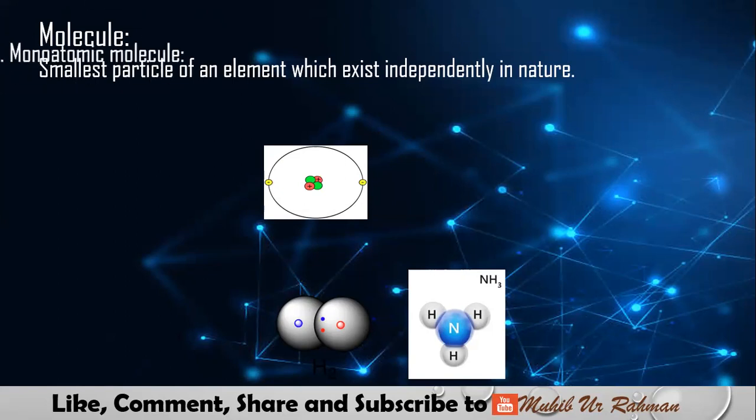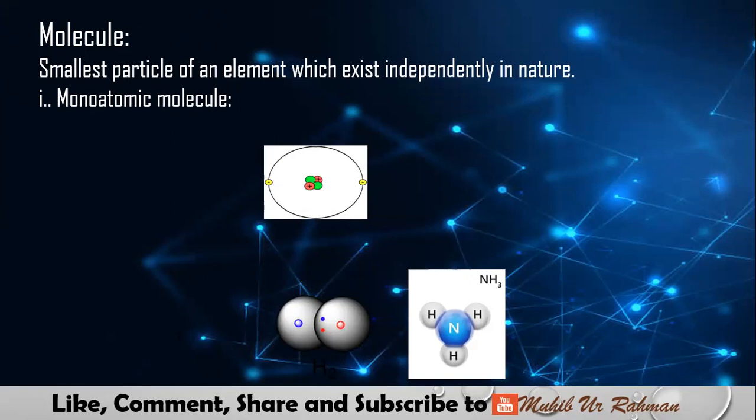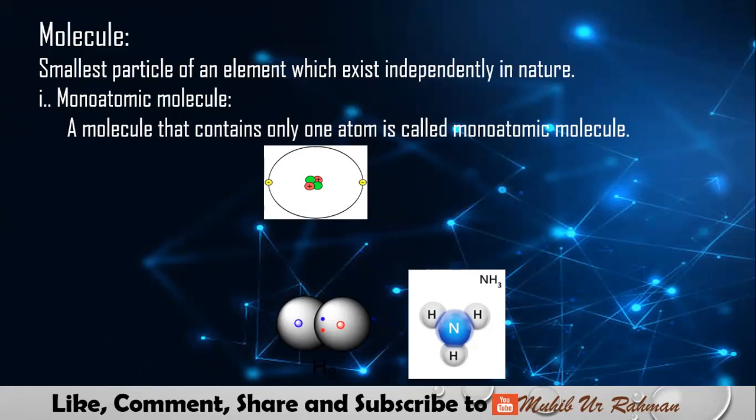Molecules are categorized as monoatomic or polyatomic. Monoatomic molecules contain only one atom. These are noble gases - Group 18 elements that we'll discuss in detail: helium, neon, argon, krypton, xenon, radon. These are very stable due to duplet or octet rules. Monoatomic molecules are just one atom that can exist independently.